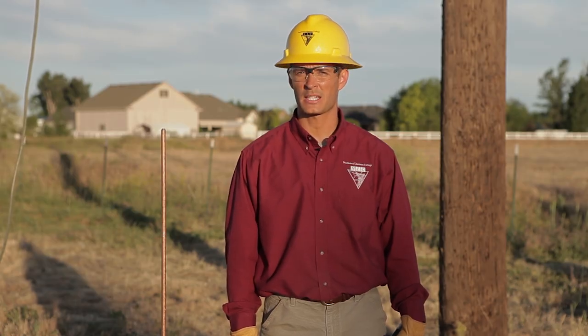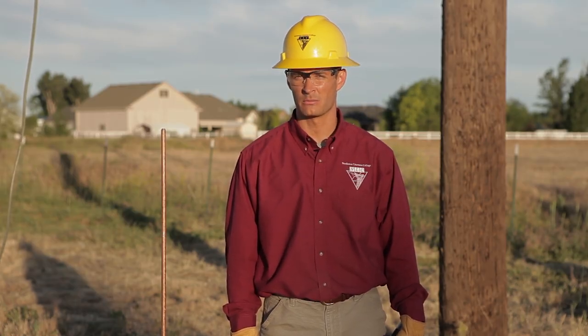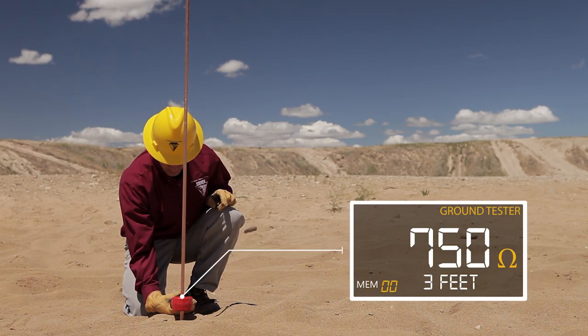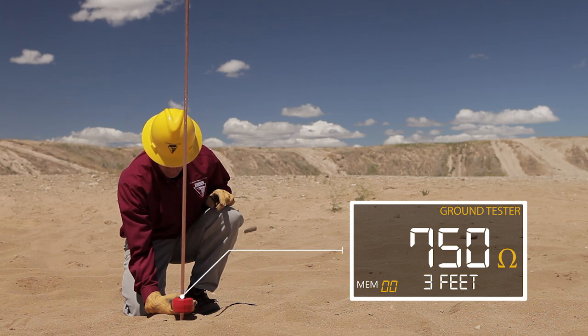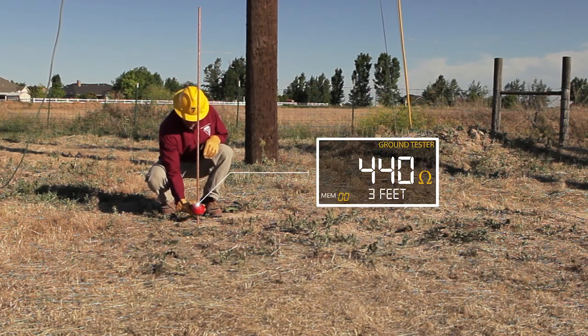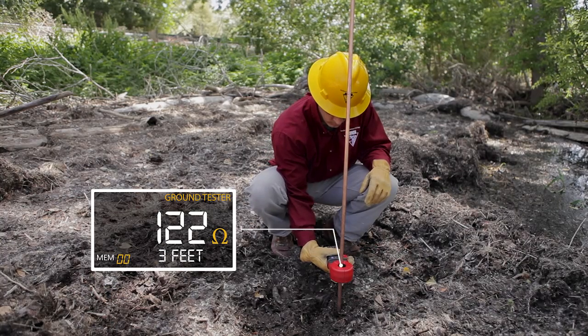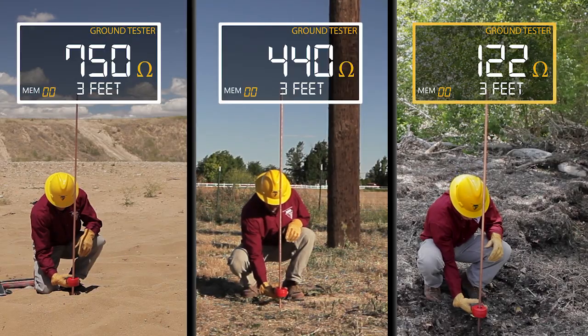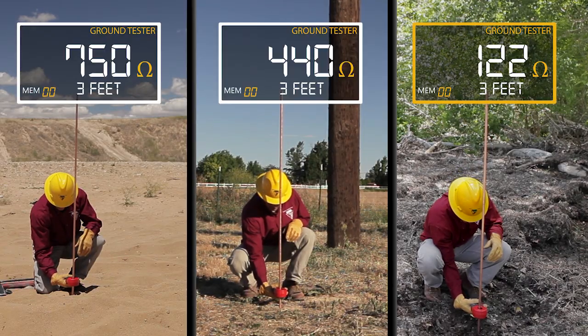Resistance is also affected by the type of soil the ground rod is driven into. I drove a ground rod three feet in the sandy soil and got a resistance of 750 ohms, which is more than the ground rod driven three feet in the dirt that had a resistance of 440 ohms. I also tested the resistance in swampy soil at the same depth and got a resistance of 122 ohms. So of the three soils tested, the swampy soil had the best grounding source.